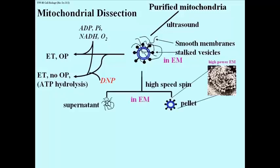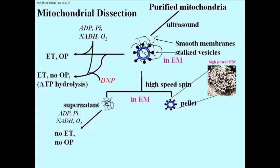The stalked particles were then isolated by centrifugation and further dissected. An electron micrograph shows the particles after this isolation. The supernatant from the centrifugation, containing mostly loose membrane bits, could not oxidize NADH or make ATP or do any of the things that mitochondria can do.